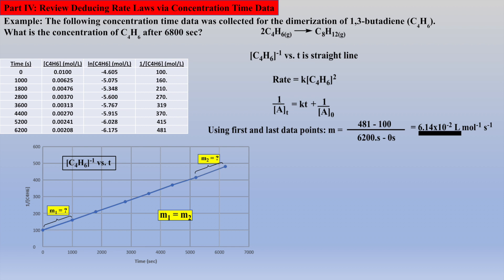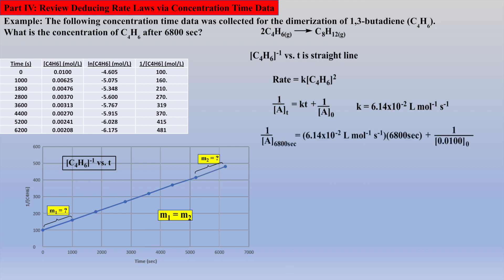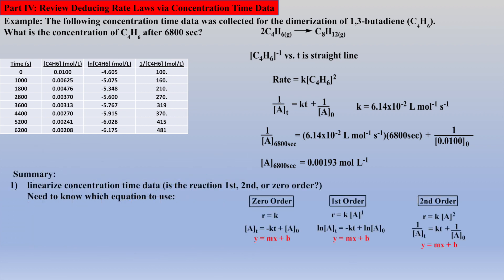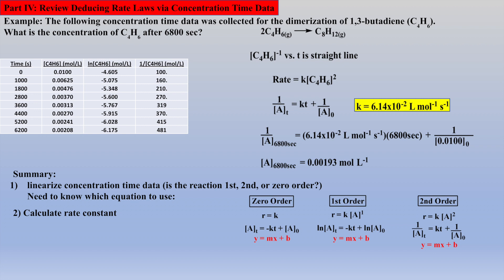Now to calculate the rate constant, we will need the first and last data points to calculate the slope. Now substitute the rate constant, the time of 6,800 seconds, and the initial concentration into the integrated second-order rate law to calculate the concentration of reactant at 6,800 seconds. In summary, we took the concentration time data and found under which conditions the data is linear, which was 1 over the concentrations of 1,3-butadiene versus time. We also needed the rate constant, which was calculated by simply calculating the slope of the linearized data. With three of the four variables in hand, the concentration of 1,3-butadiene at 6,800 seconds was obtained.